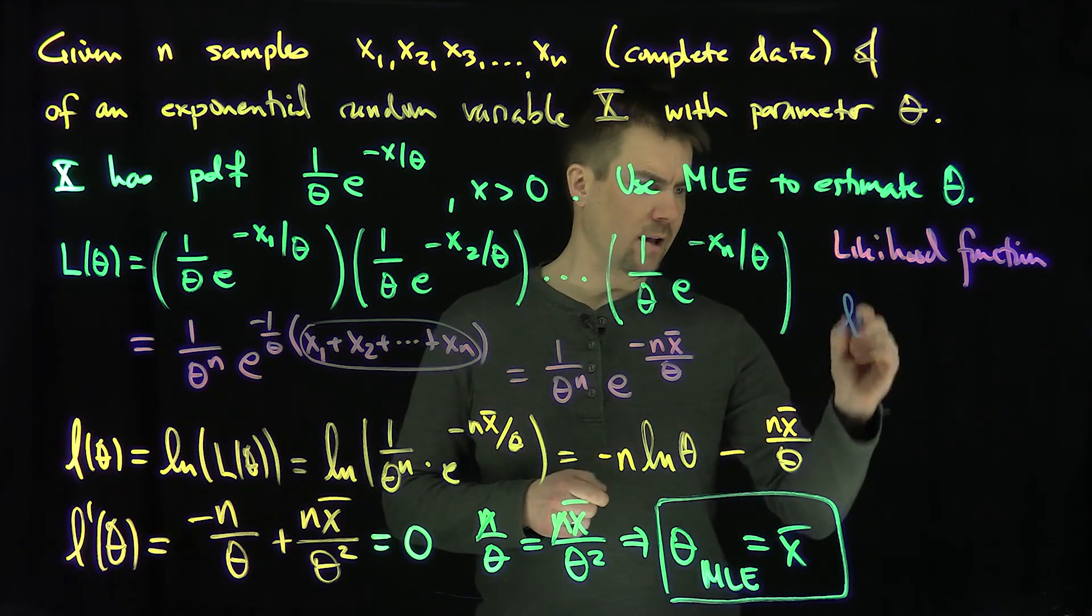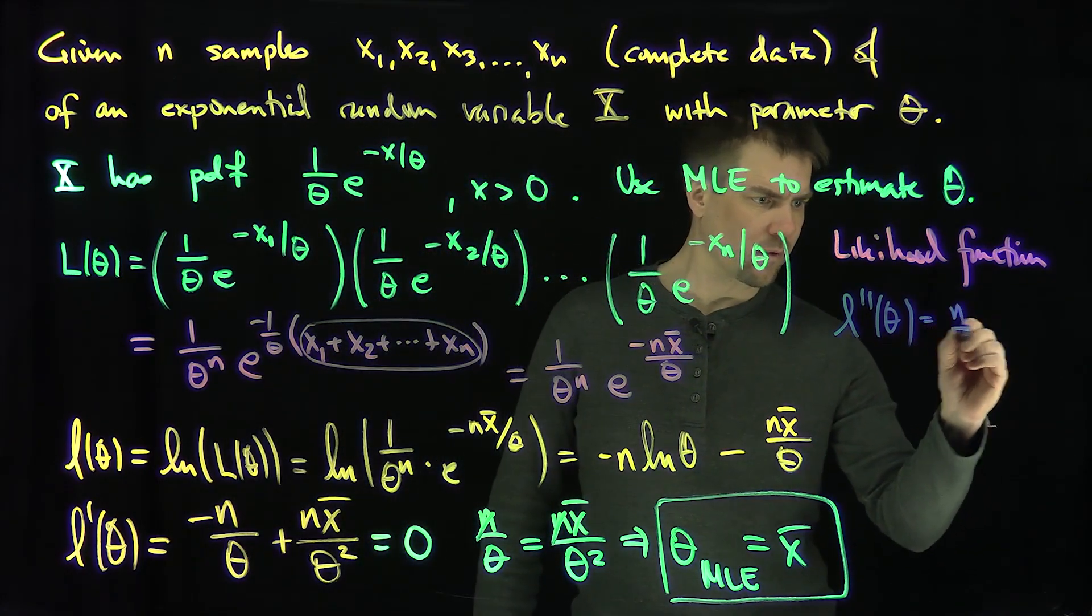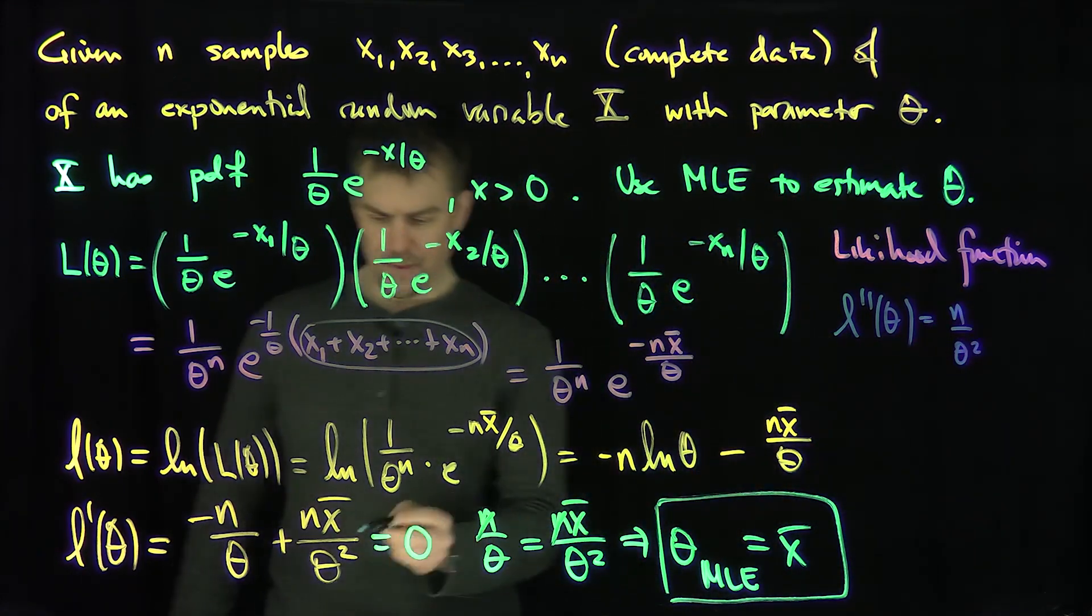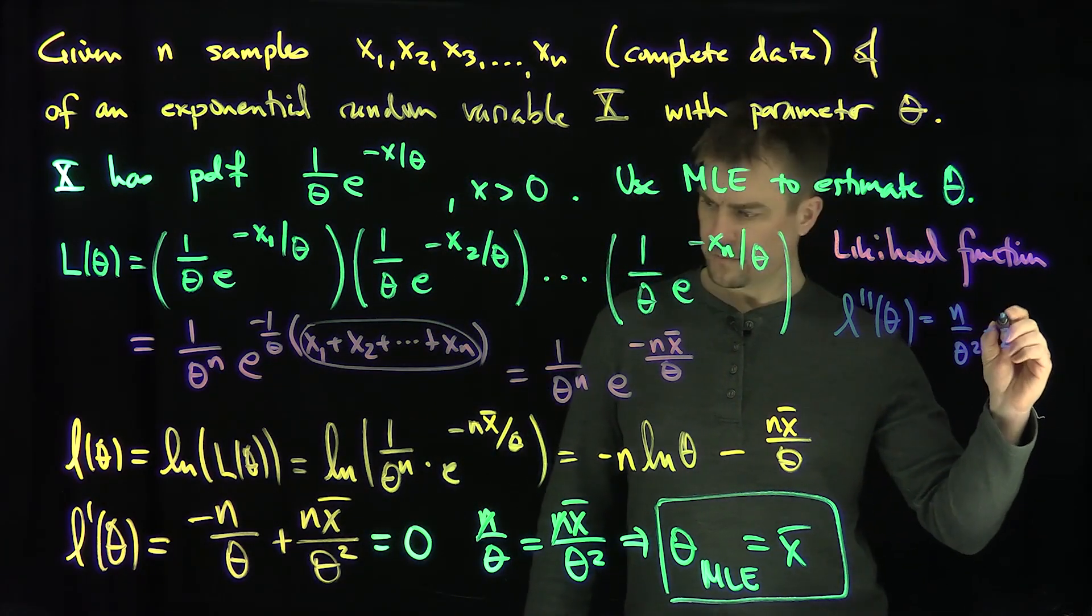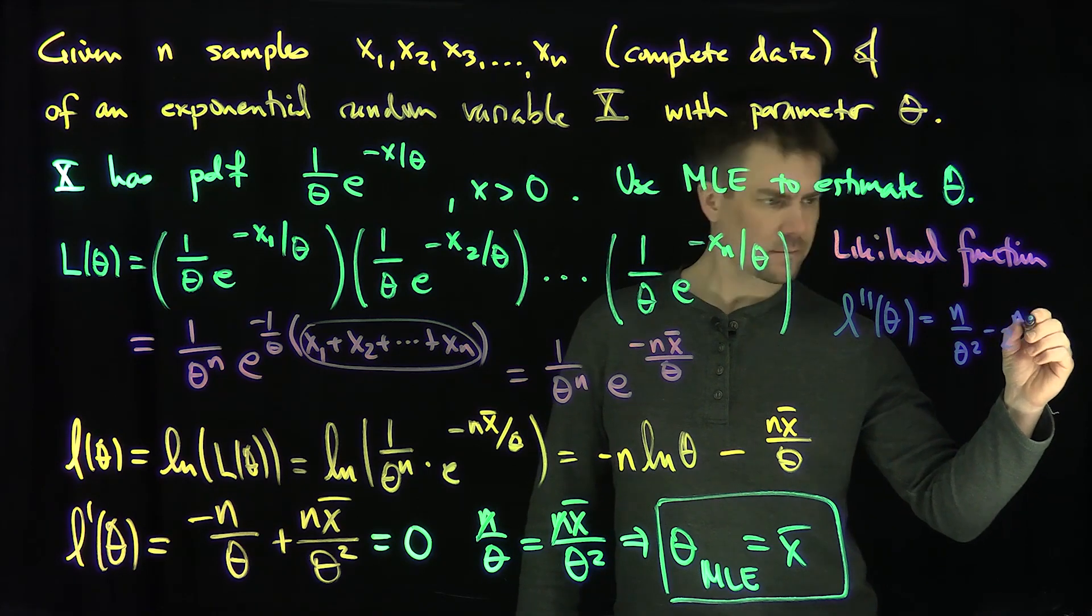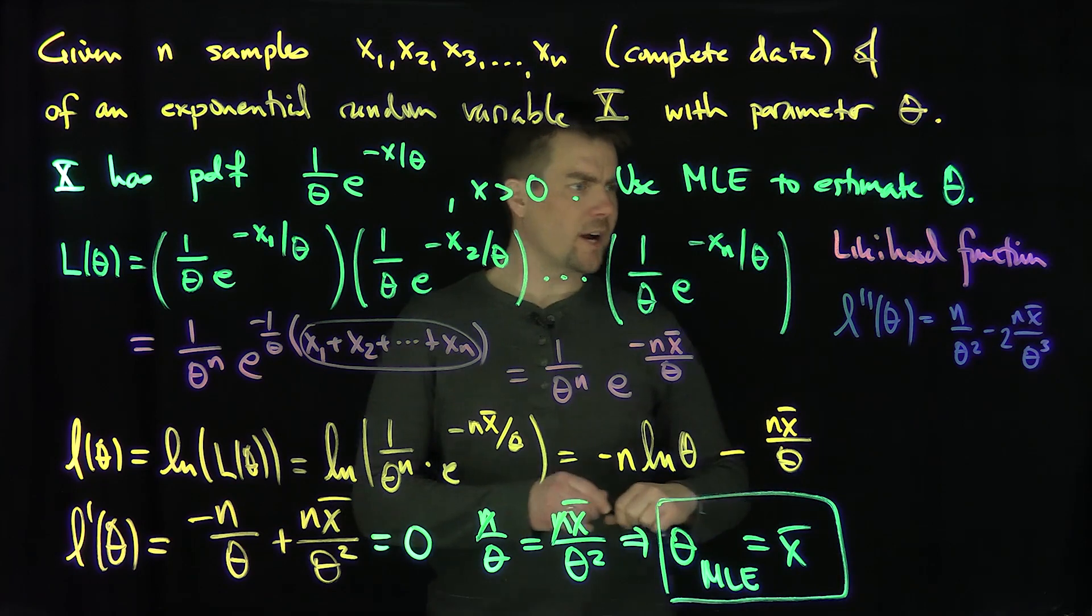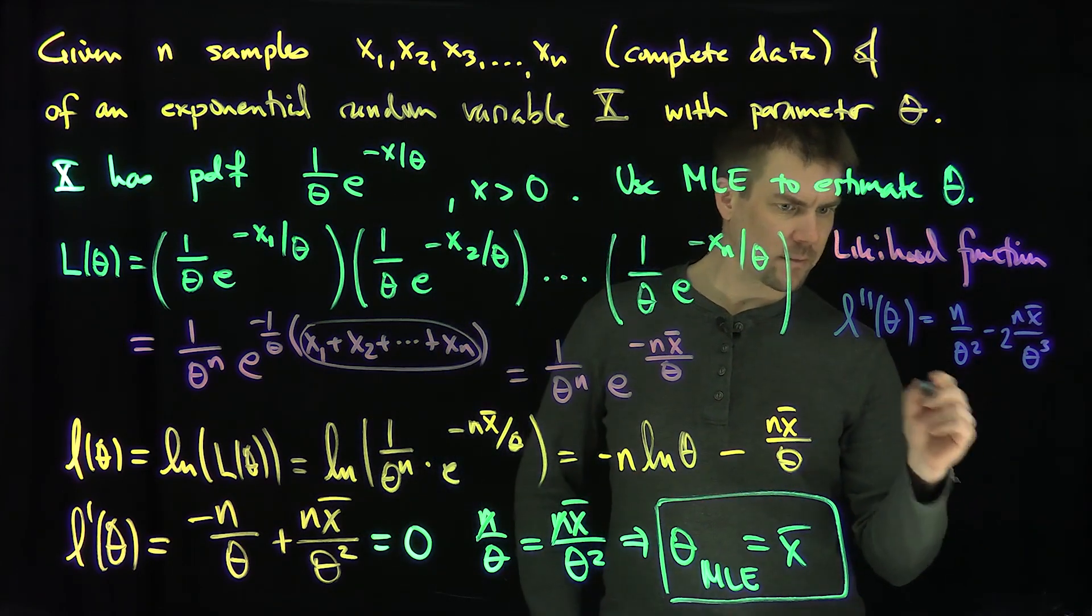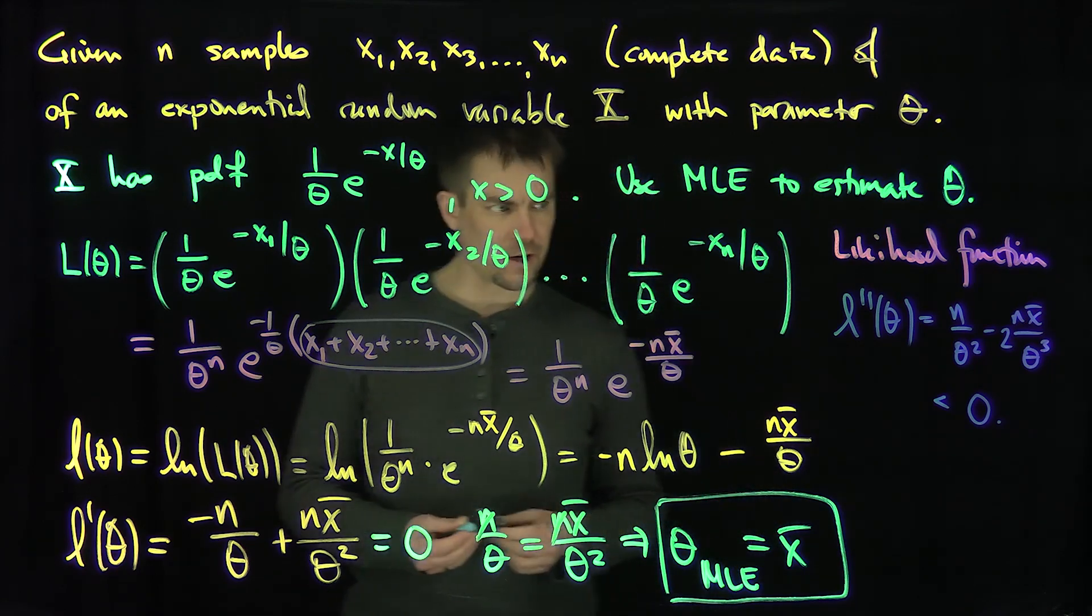So second derivative, l double prime. So l double prime of theta is going to be n over theta squared. And then this thing is going to be a negative 2 n x bar over theta cubed. And you'll be able to check. You can check that this is less than zero under the right circumstances. So in other words, we do, in fact, have a maximum over here.